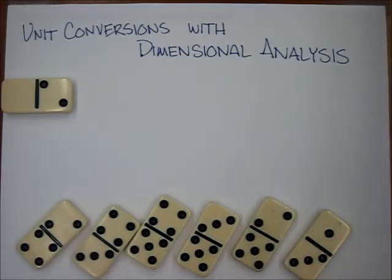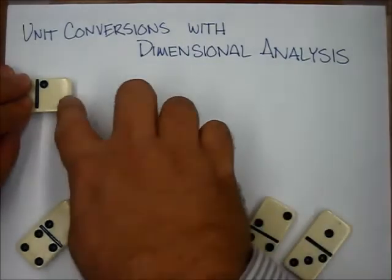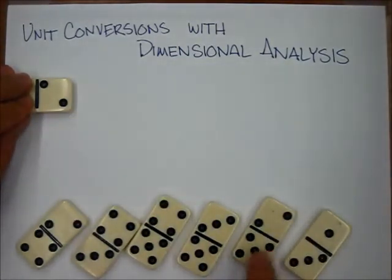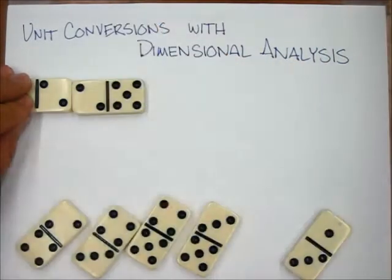If you haven't played dominoes before, like the actual game as opposed to knocking them down, the basic concept is someone's played tiles out and you look at the tiles at the end of the rows and you need to match the number of dots. So I can play any of my tiles that have two dots, so I could grab this tile and play it there.